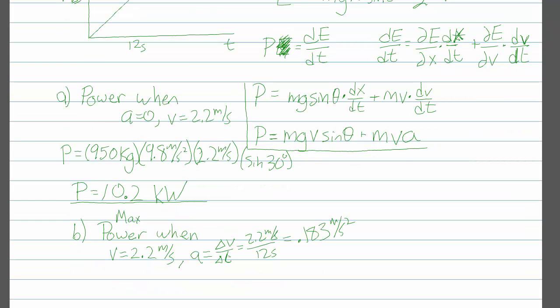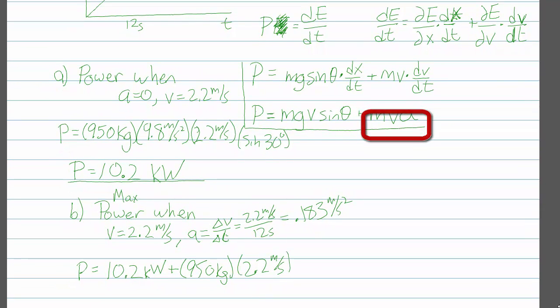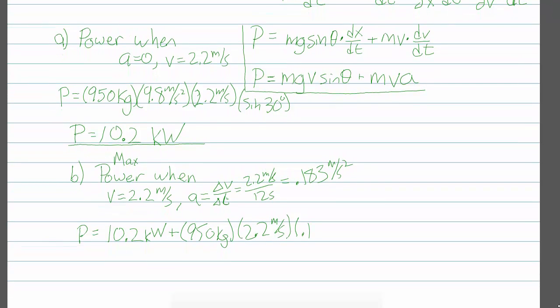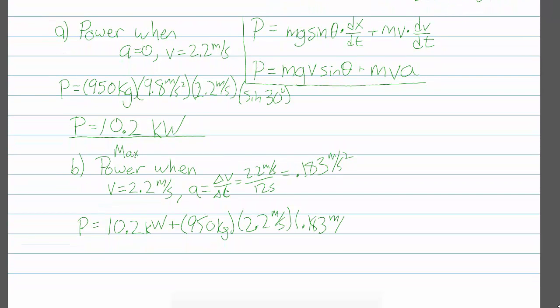So that gives us, so that occurs just before the acceleration drops to zero, and we plug in. The first term is still the same. We get our same 10.2 kilowatts for the mgv sine theta. But now we have to add another 950 kilograms times 2.2 meters per second times the acceleration this time, which is the 0.183 meters per second squared. And we get a power then of 10.6 kilowatts.